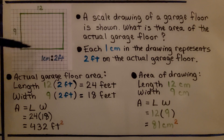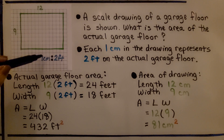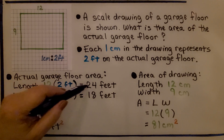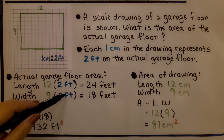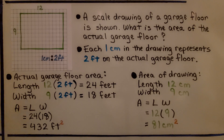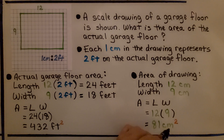A scale drawing of a garage floor is shown. The scale is one centimeter to two feet — each one centimeter represents two feet on the actual garage floor. The length is twelve centimeters: twelve times two equals twenty-four feet. The width is nine centimeters: nine times two equals eighteen feet. Area equals length times width: twenty-four times eighteen equals four hundred thirty-two square feet. The area of the drawing itself is twelve times nine equals eighty-one square centimeters.